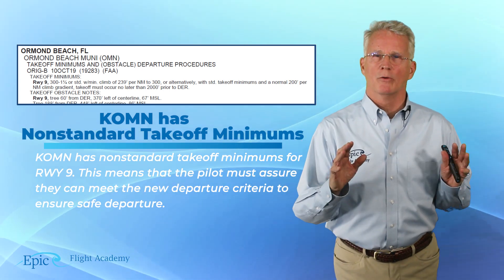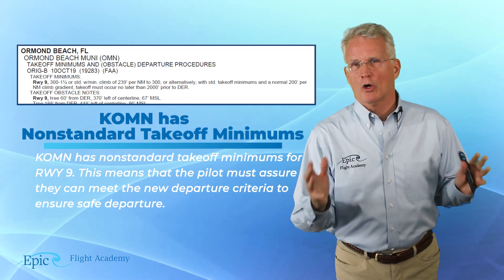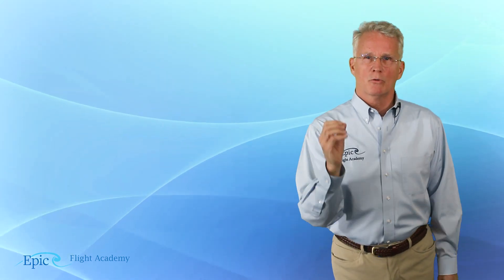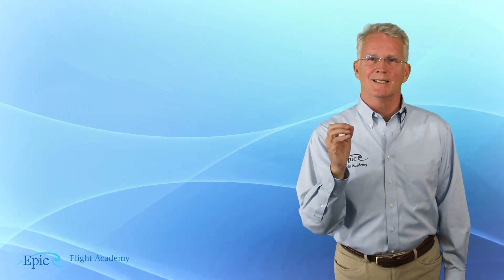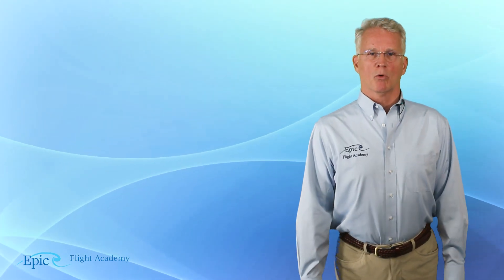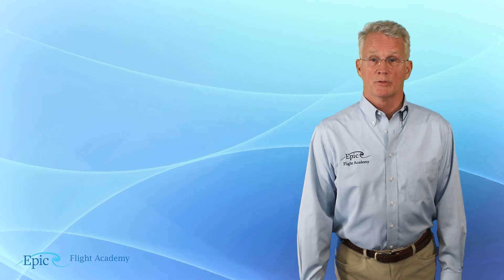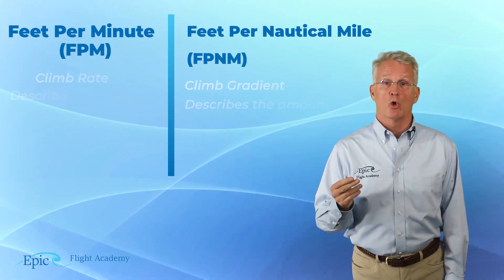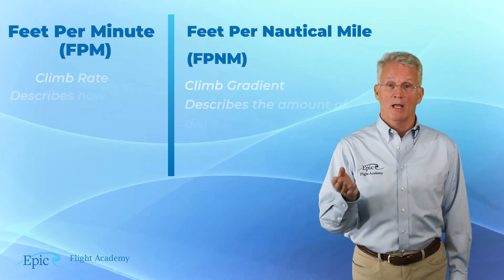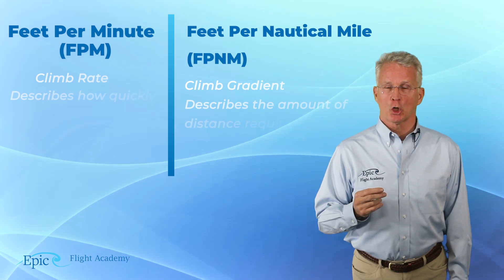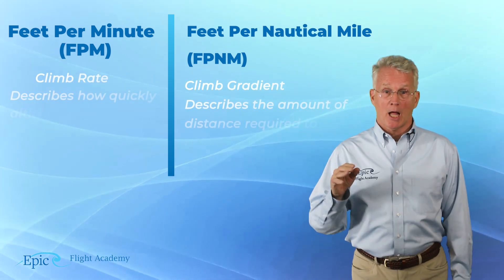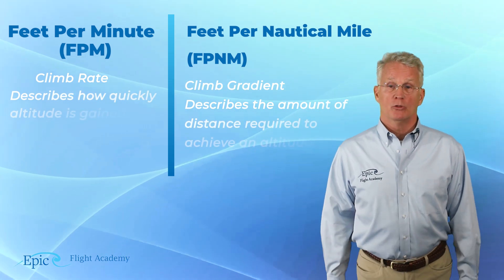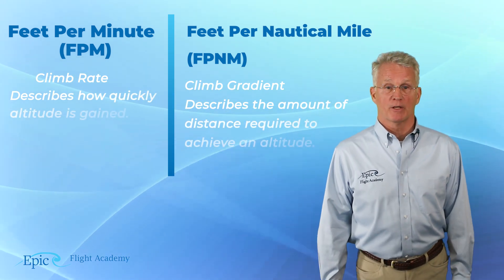When we talk about determining whether or not we can make a safe departure, there are two critical factors we need to study in more depth. Number one is feet per minute climb rate — this describes how quickly altitude is gained. Number two is feet per nautical mile, my climb gradient — this describes the amount of distance required to achieve a specific altitude.